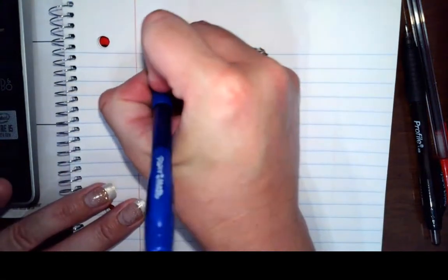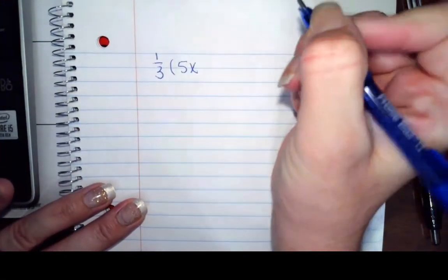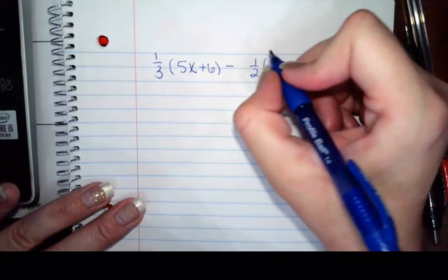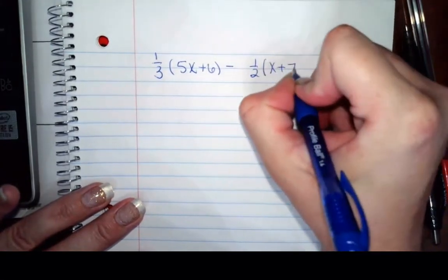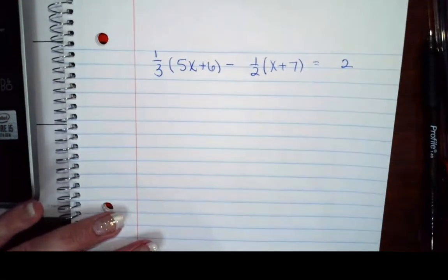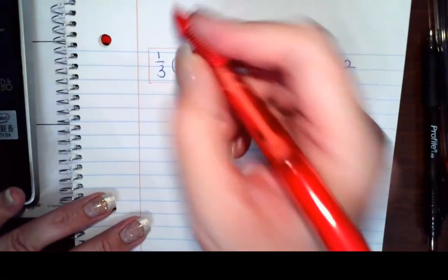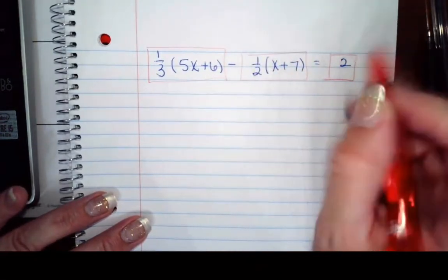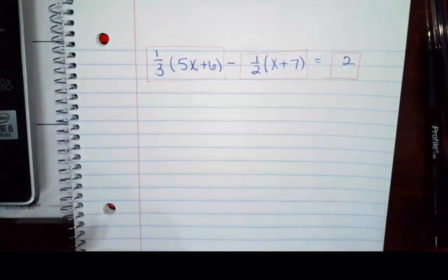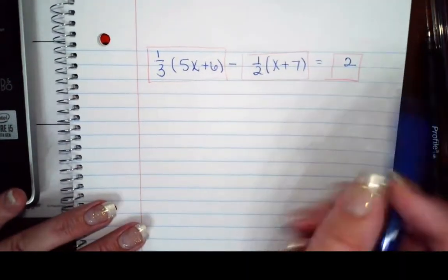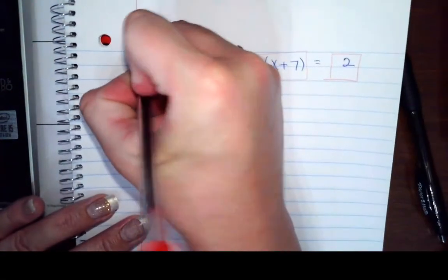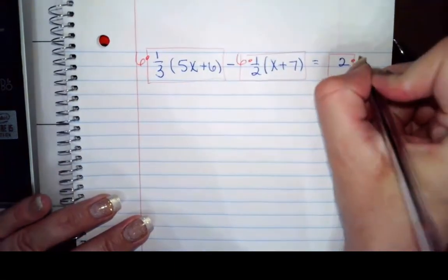Let's try another one. Fractions are our friends. We have one-third times five x plus six minus one-half times x plus seven, and that's going to equal 2. So how many terms do we have? This is glued together with multiplication. Then I have this one, and then I have this one. So I've got three chunks that I'm working with. So my denominators are 3 and 2. If I needed a common denominator, it would be 6. So I'm going to multiply 6 times all three chunks.